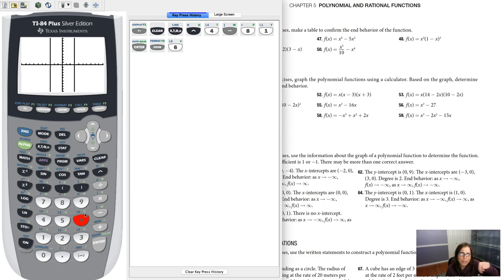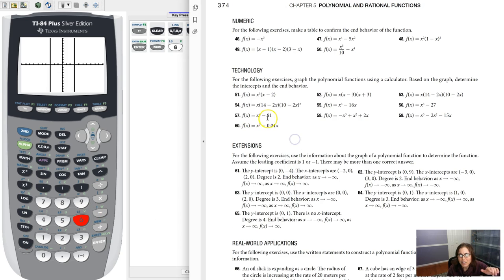So again, if I think about my general x to the fourth, it looks like a parabola, right? It might have more bumps in it, but this one won't because there's not any extra stuff. It's just x to the fourth minus 81. So think of your basic x to the fourth graph, and then it's been shifted down 81 units.